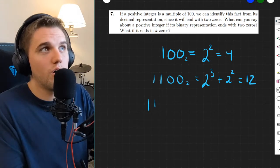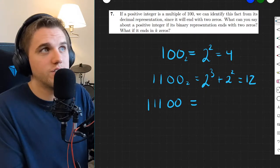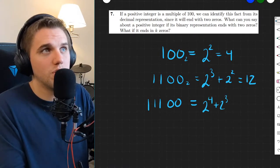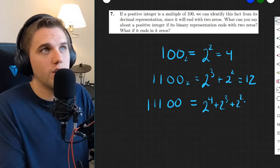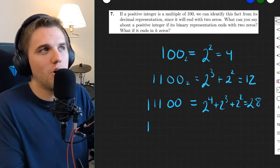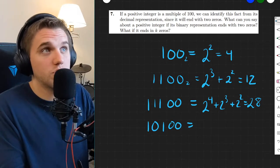What about 1110₂? Well, this is 2 to the fourth power plus 2 cubed plus 2 squared, which is 28. What about 10100? That ends in two zeros. What would this one be? Well, this is 2 to the fourth plus 2 squared, which is 20.